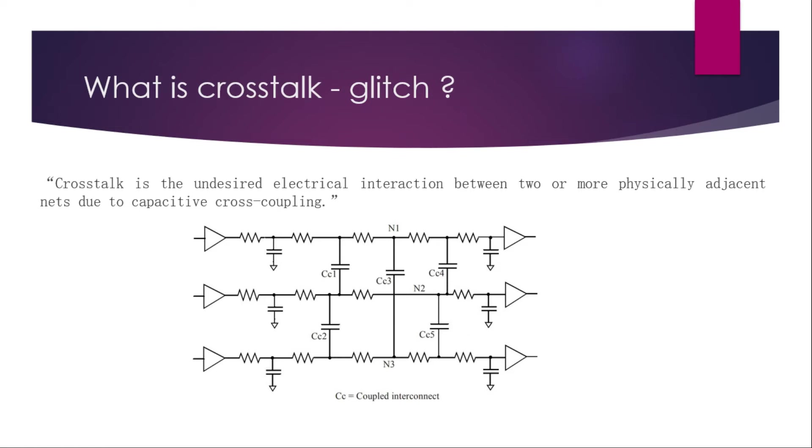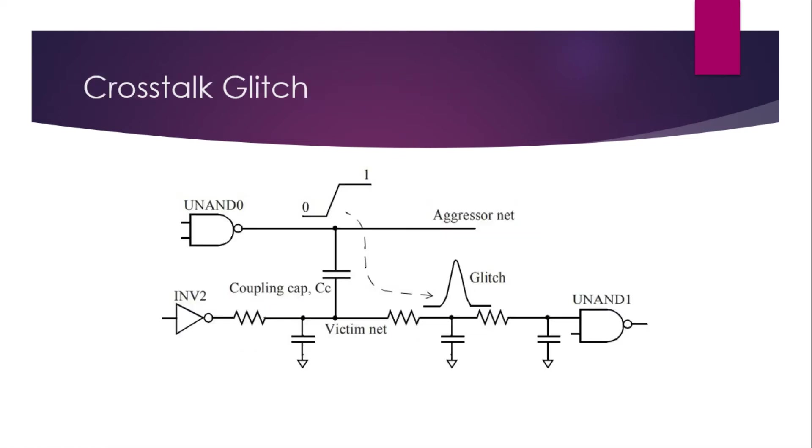It's a parasitic capacitor which is over there. So we are calling them CC1, CC2, CC3, CC4, and CC5. But they are not physical capacitors. If you want to visualize how crosstalk propagates, this is how it looks like.